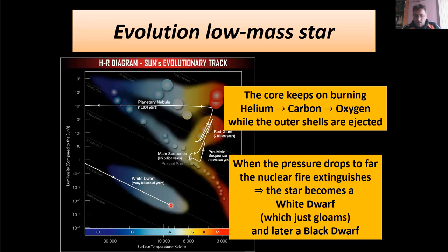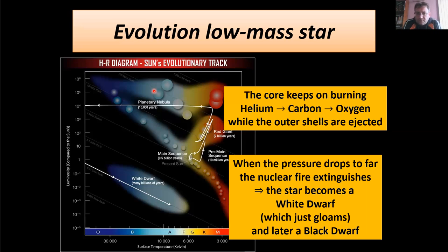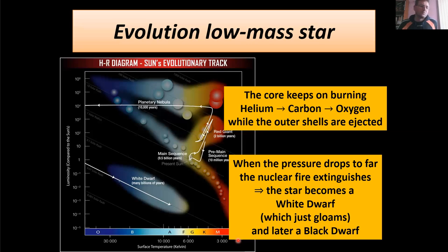Recalling the Hertzsprung-Russell diagram: our Sun will leave the main sequence, become a planetary nebula, the nebula vanishes, and the white dwarf is left. The white dwarf glows for a while, then eventually cools and dives into the black dwarf phase. Could black dwarfs contribute to dark matter? Probably not much — our Sun burns for 10 billion years, and the universe is only 13.7 billion years old, so there can't be too many corpses yet.